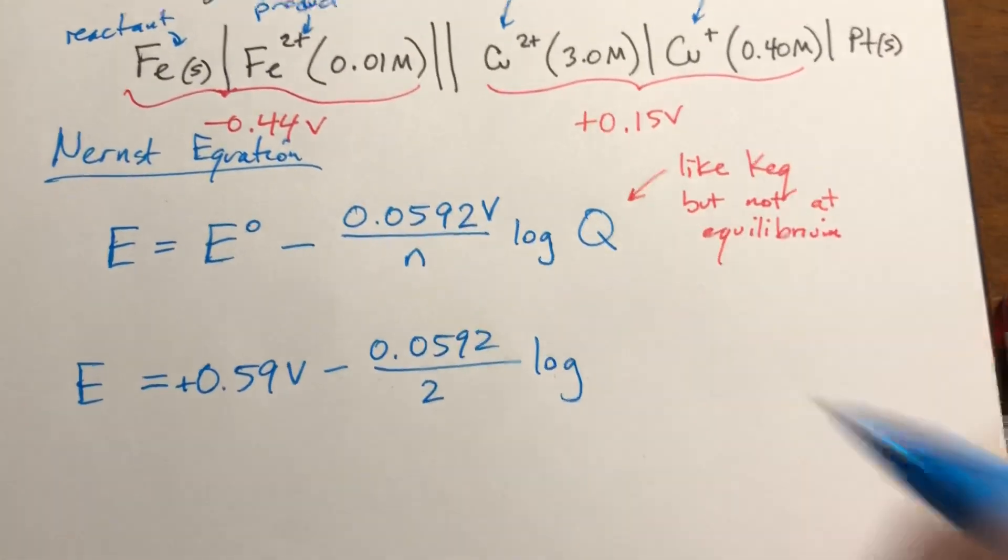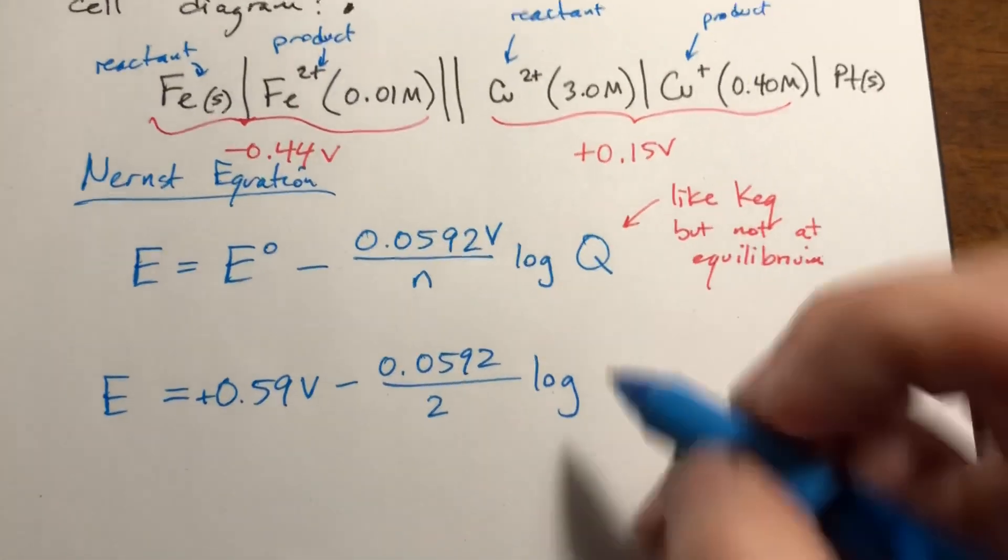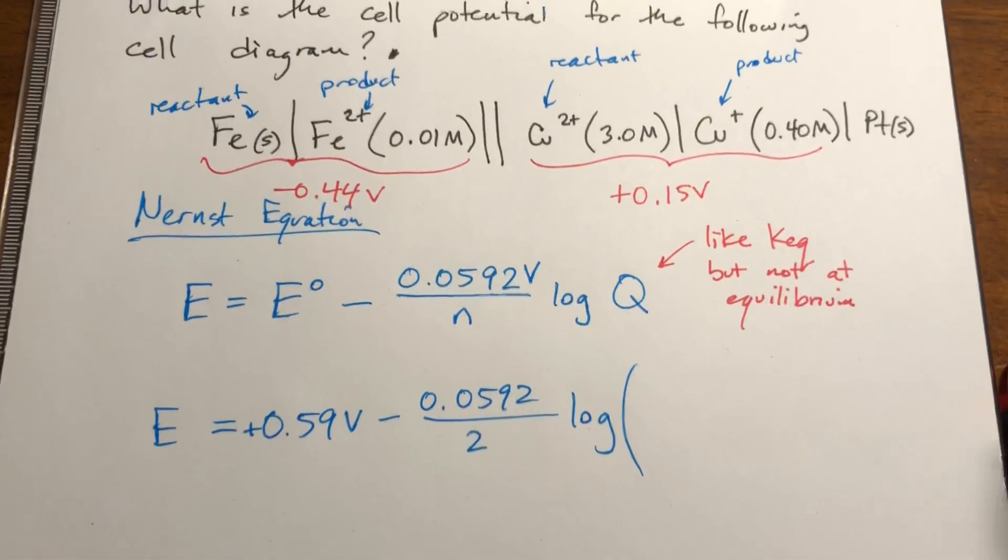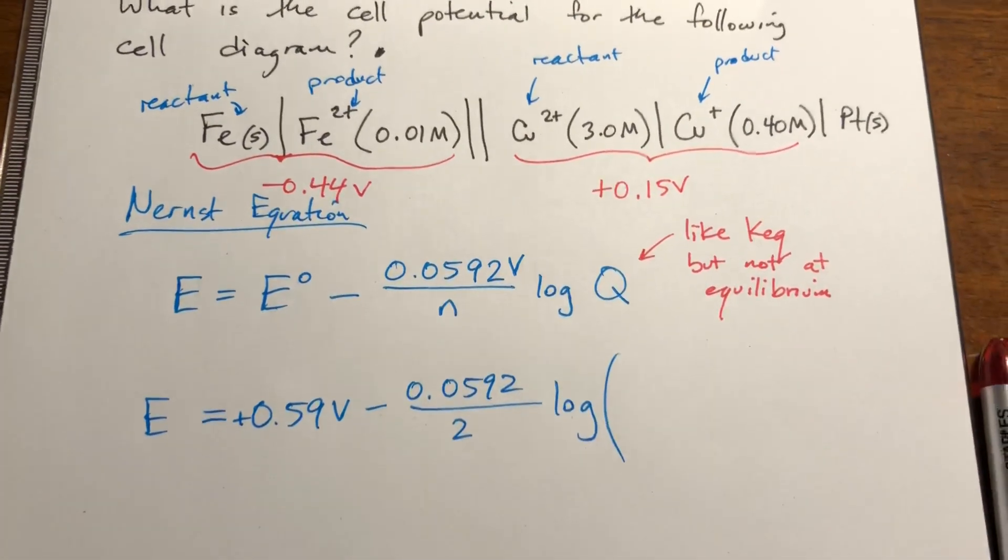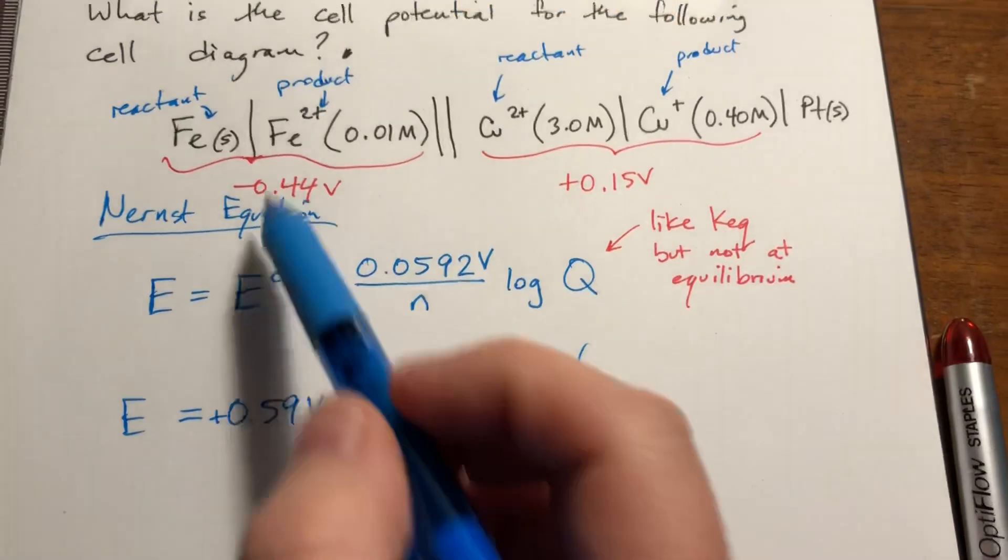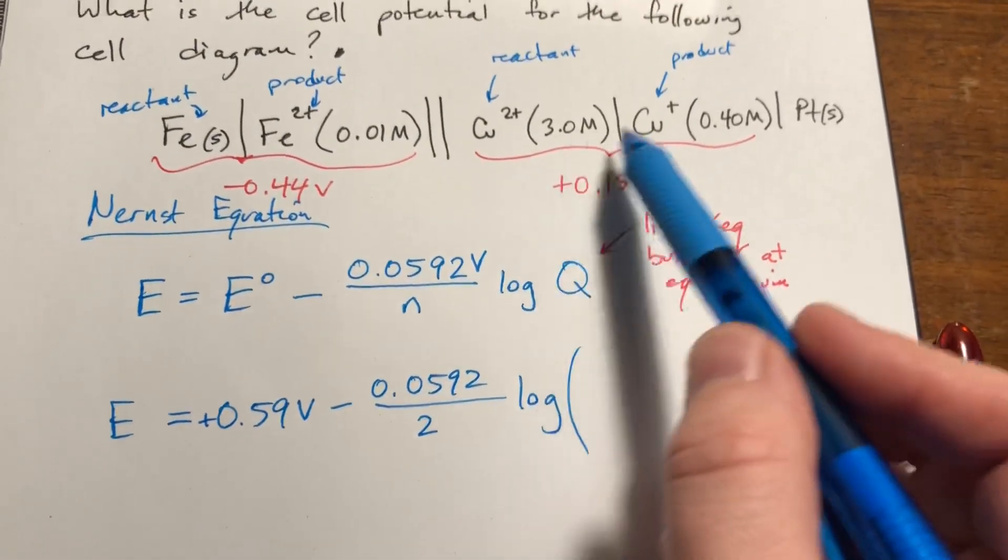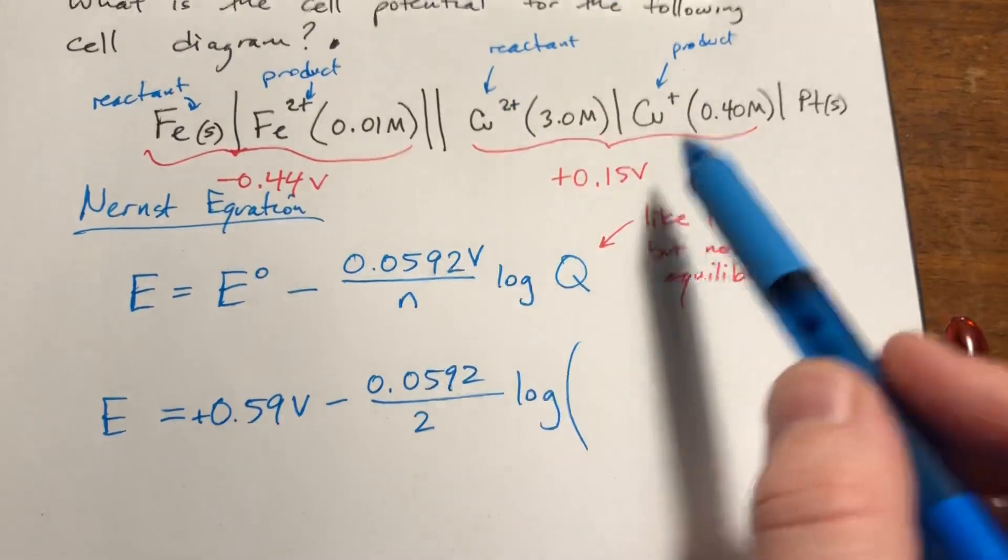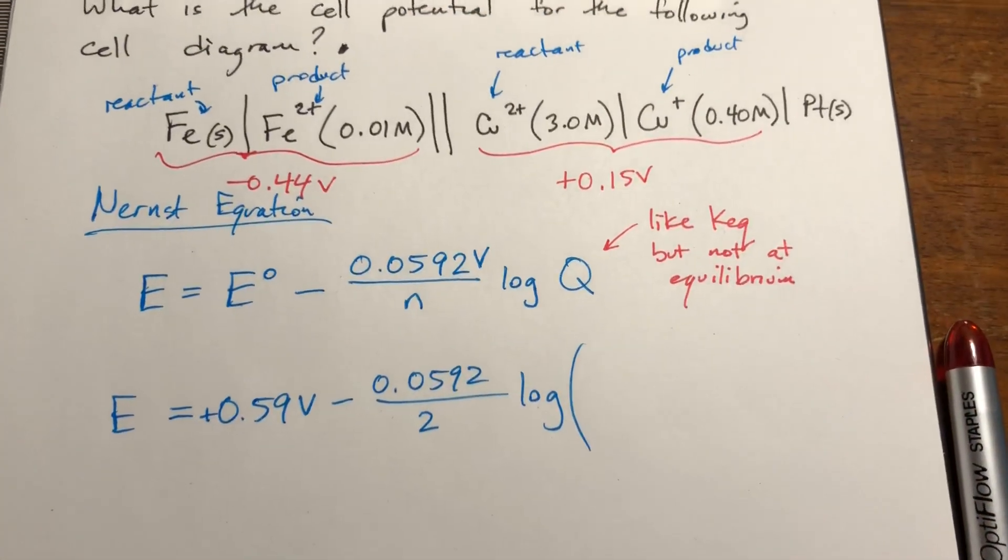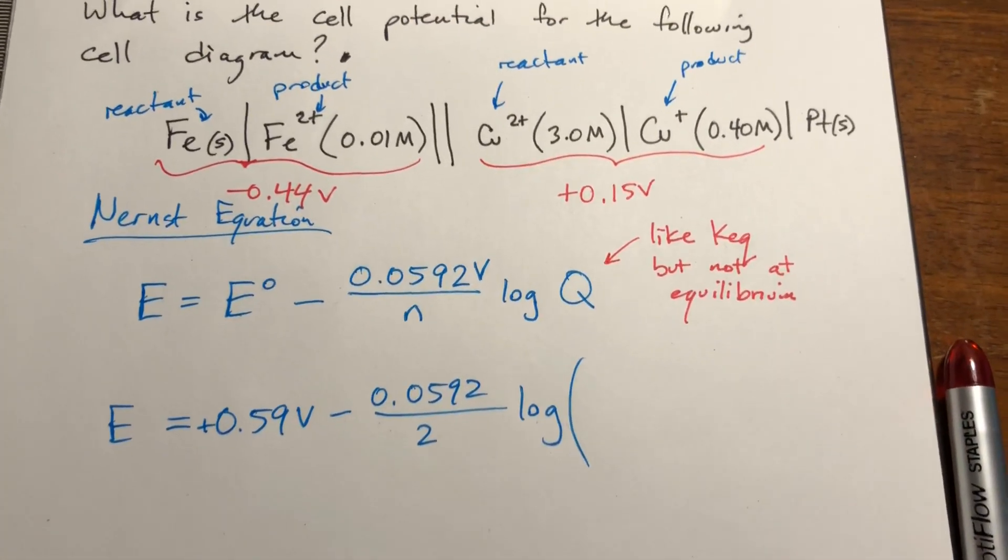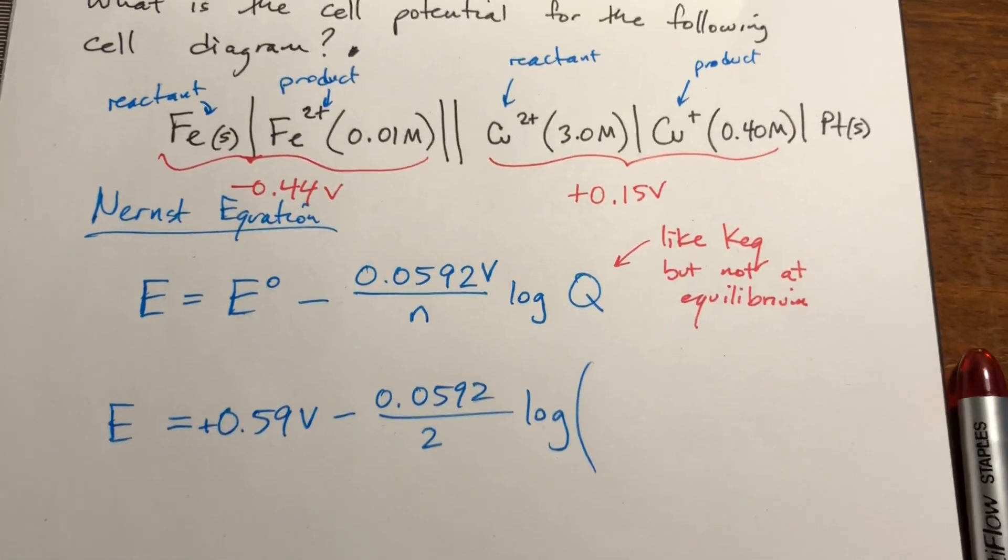And then solving for the log of Q. Q is going to be the hard part. So before we can even do Q, we need to write out the balanced equation. So since this has two electrons being transferred and this has one electron being transferred, we're going to double all of this, okay? Just like we did in the balancing stuff in the previous, the first couple videos, okay?